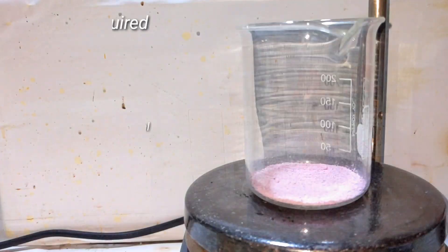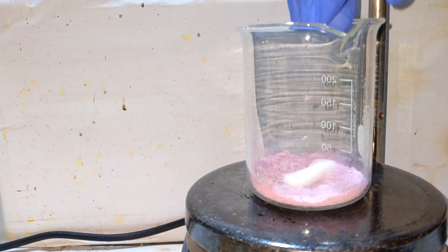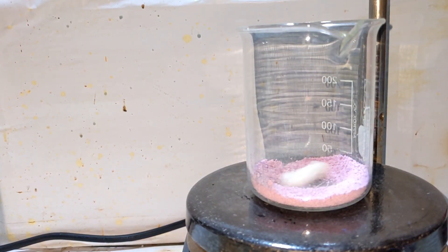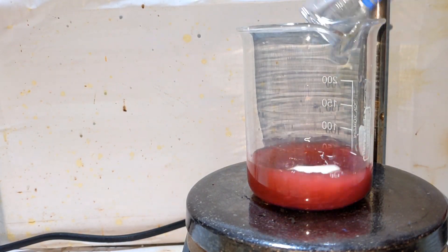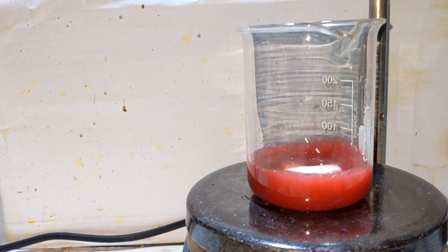12 grams of cobalt(II) chloride was placed in a beaker on a stir plate. A stir bar was then introduced and 35 milliliters of distilled water was added to make a solution of cobalt(II) chloride.